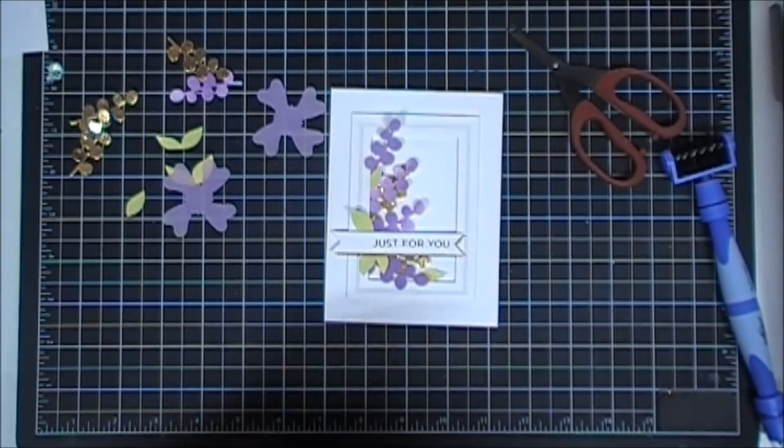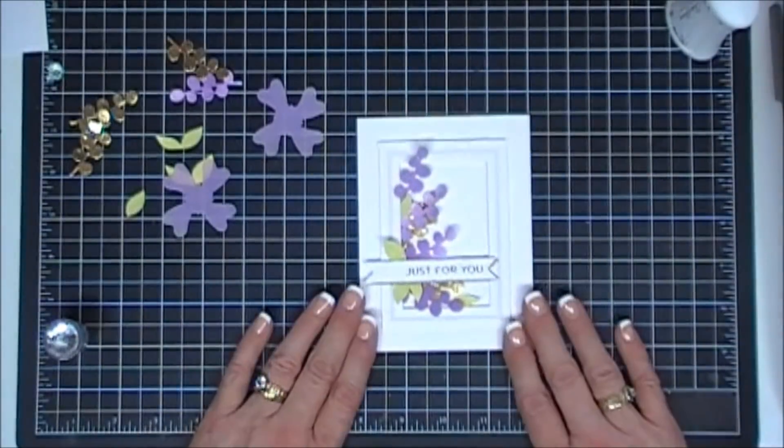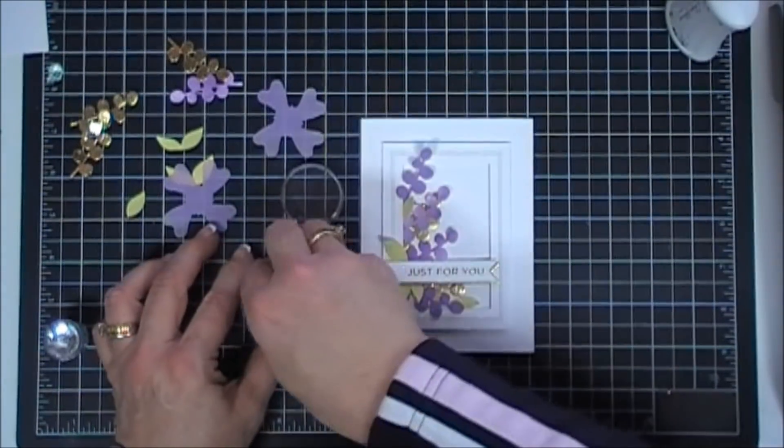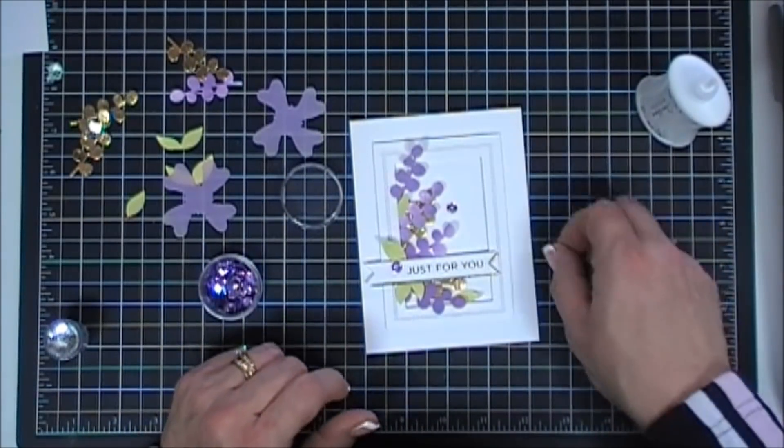And then for bells and whistles, I'm going to bring in some purple sequins. Three is the magic number. I've been using three sequins on my projects lately and I think it's just the perfect amount.